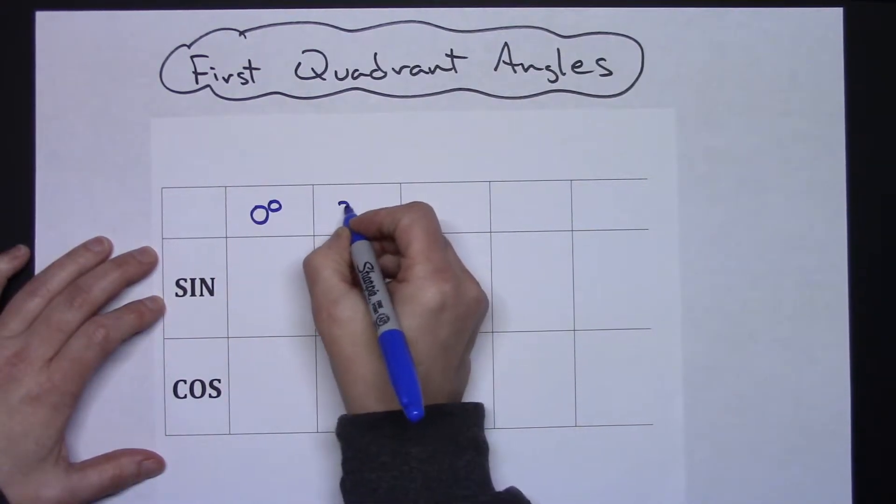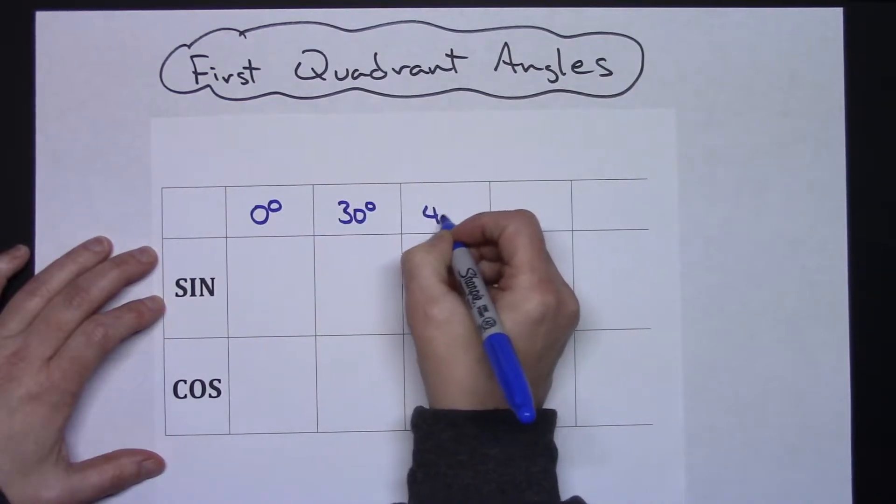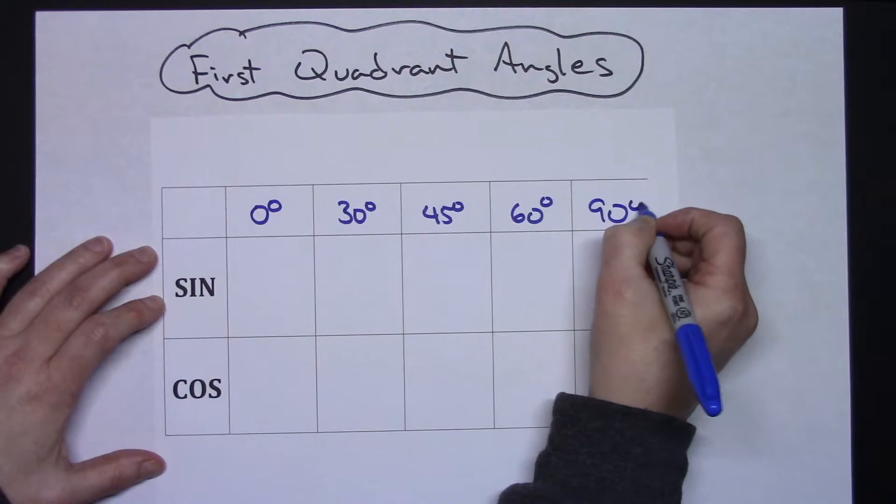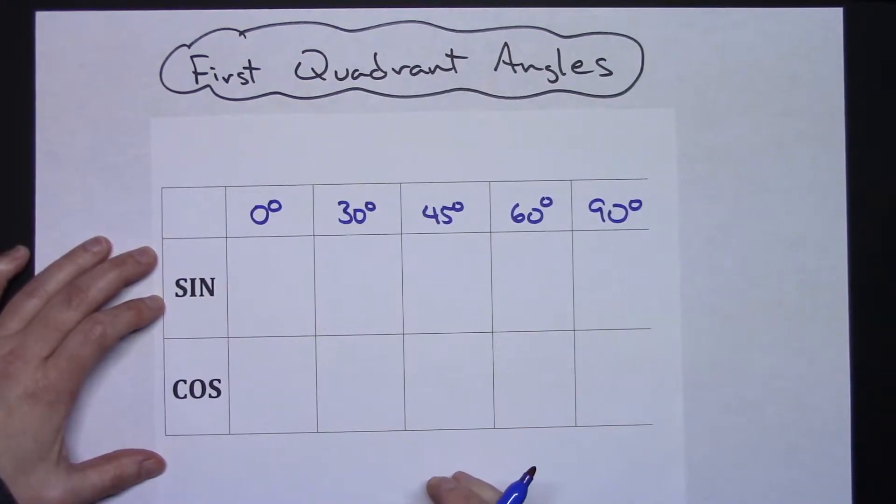So zero degrees, 30 degrees, 45 degrees, 60 degrees, and 90 degrees. Those are all the ones that we need in the first quadrant.